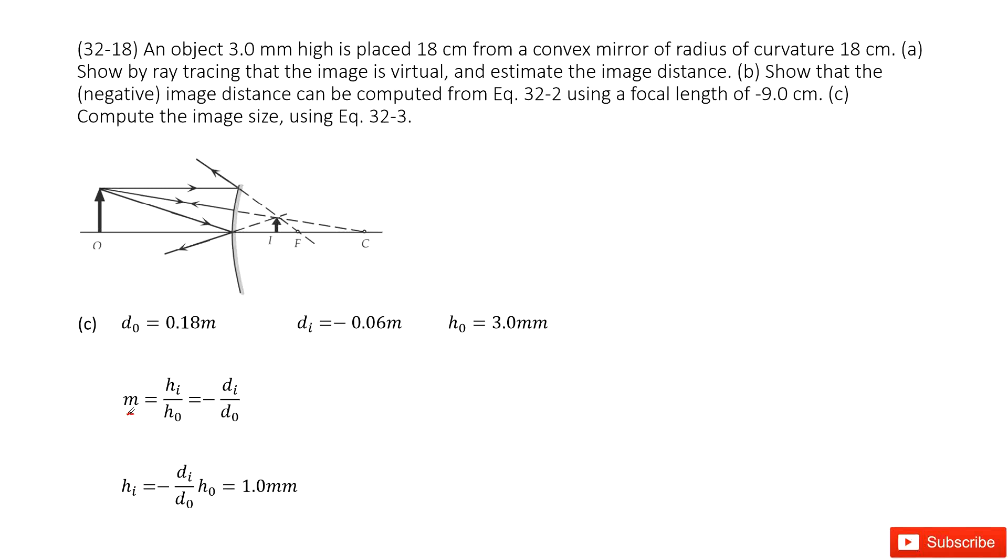By definition, M can be hᵢ divided by h₀. This is the height of image divided by the height of object, and equals negative the distance of image divided by distance of object.